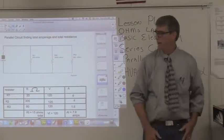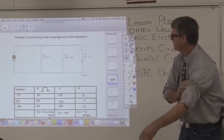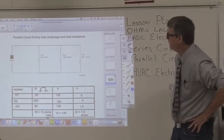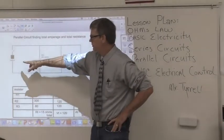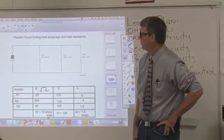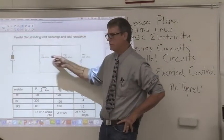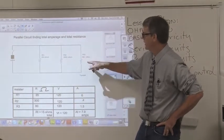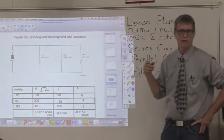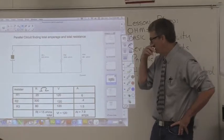Let's do the math on this particular circuit. We don't know what the amperage is, but we know what the voltage is. The voltage supply is 120 volts. We know what the resistance is: we have a 20 ohm resistor, a 300 ohm resistor, and an 80 ohm resistor.